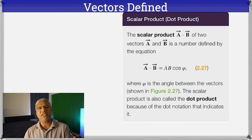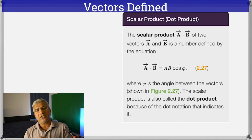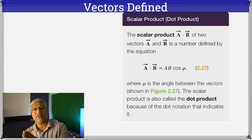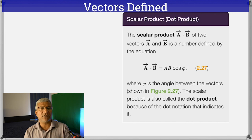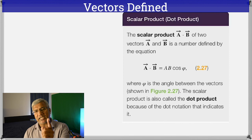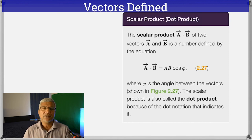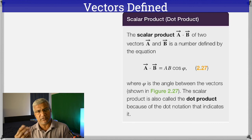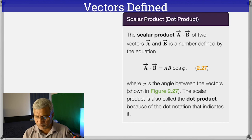On the other hand, what about I·I? The angle between I and I is zero degrees, and cosine zero is one. The value of I is one because it's a unit vector, so I·I equals one. Same thing: J·J equals one, K·K equals one. So the dot product of a unit vector with itself is one, but the dot product of one unit vector with a different unit vector — like I and J, J and K, or I and K — is zero.